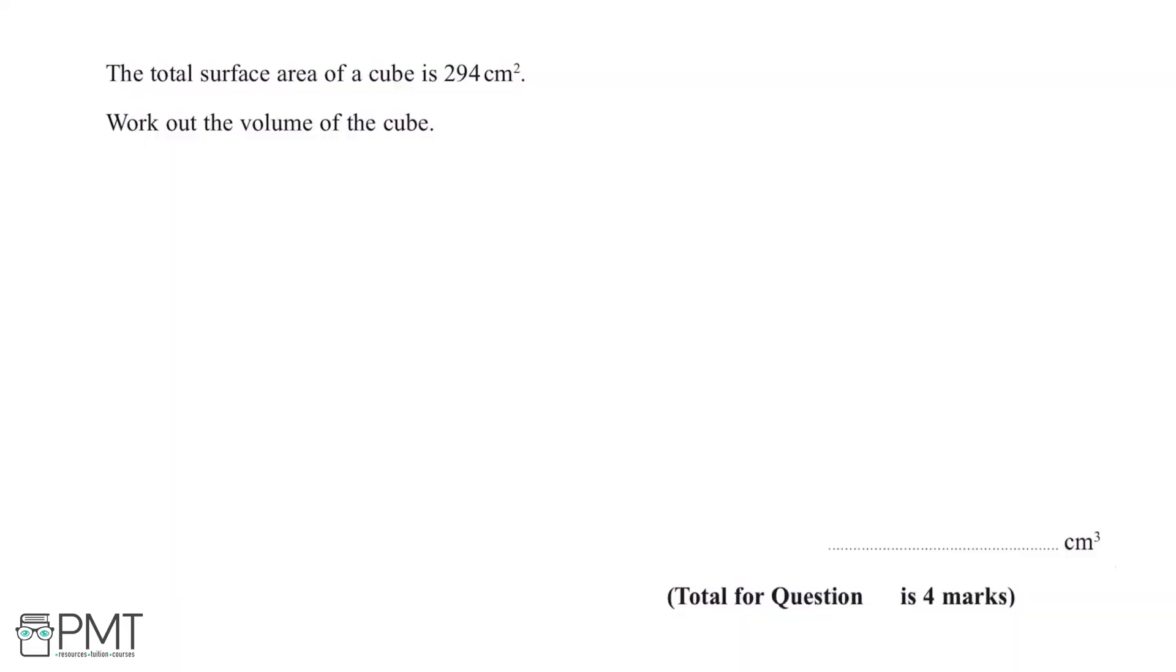The total surface area of a cube is 294 cm². Work out the volume of the cube. The first thing we can do for this question is highlight the key pieces of information.